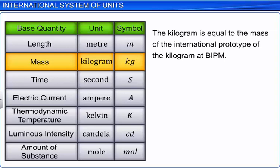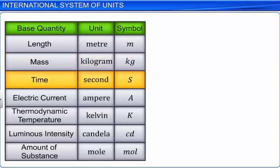Time is measured in seconds, denoted by the small letter s. A second is the duration of approximately 9 billion periods of the radiation corresponding to the transition between the two hyperfine levels of the ground state of the cesium-133 atom.